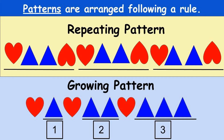Did you know that patterns also grow? We've already learned about repeated patterns which repeat over and over again, but today we're going to talk about growing patterns. A pattern is something that's arranged following a certain rule. In a repeating pattern you have a heart, a triangle triangle, and an upside-down heart, repeated again two more times. A growing pattern is a little bit different — it doesn't repeat. The hearts repeat, but the triangles grow: it starts off with one triangle, then goes to two, and finally three. That's what makes it a growing pattern.